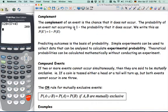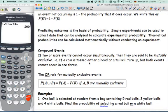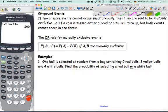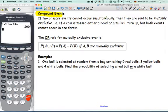We come back to just a reminder of the word complement. Complement of an event is when it does not occur. I won't read through this again, because we've gone through it, but it's always good to have a reminder of what's going on. But this is a bit new. Now we have this term compound events, and compound events are if two or more events cannot occur simultaneously, then they can be mutually exclusive. So this is a subset of the compound events. For example, if a coin is tossed, either a head or a tail will turn up, but both events cannot occur in one throw. So this is sometimes referred to as the or rule for mutually exclusive events or disjoint events.